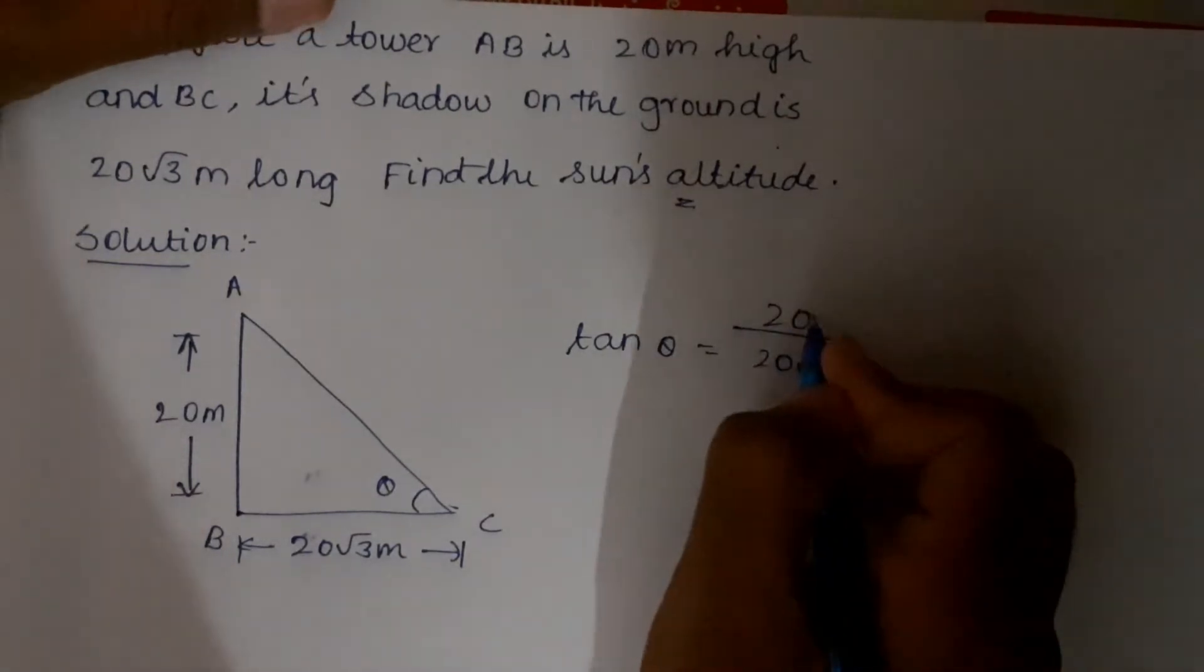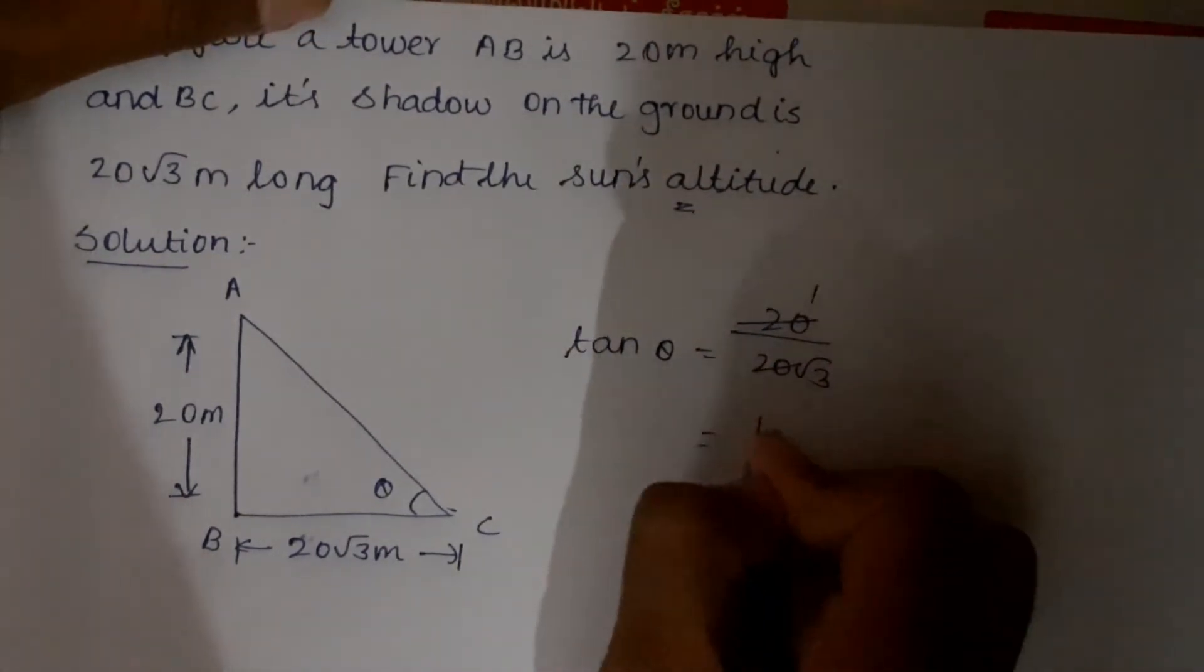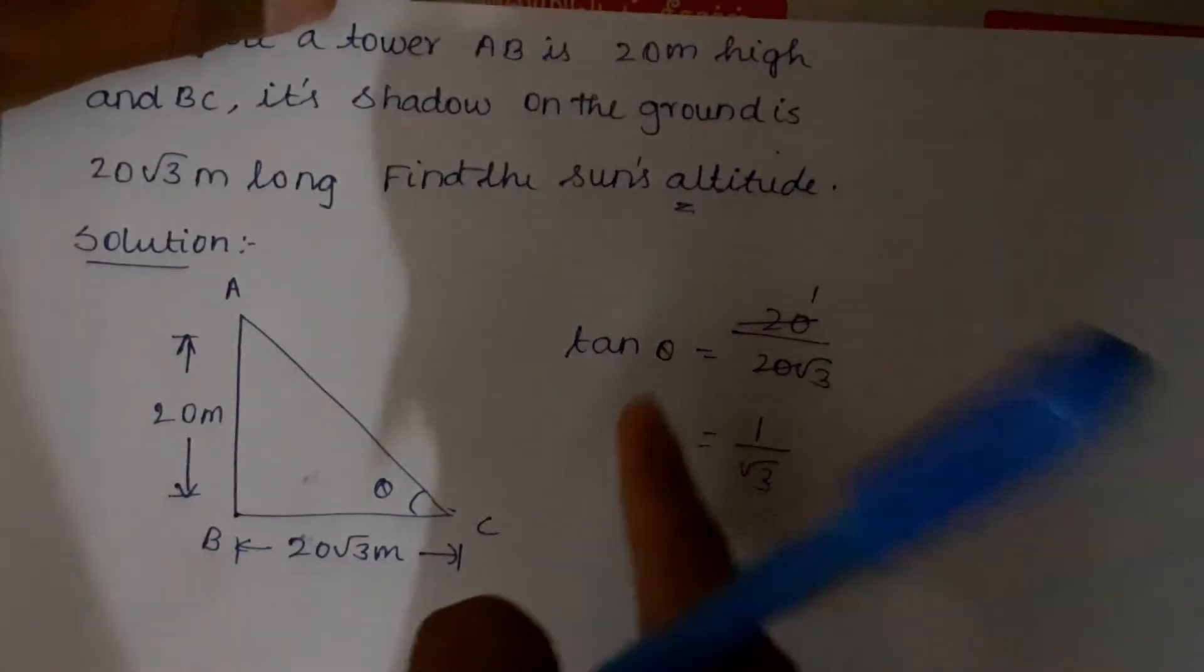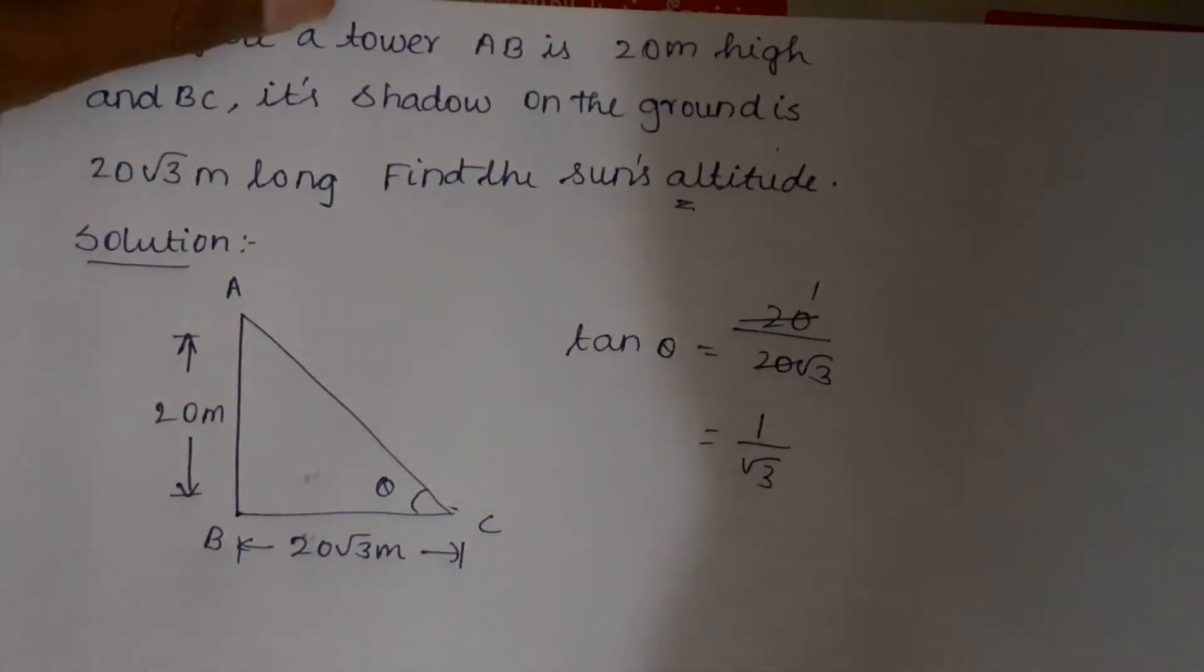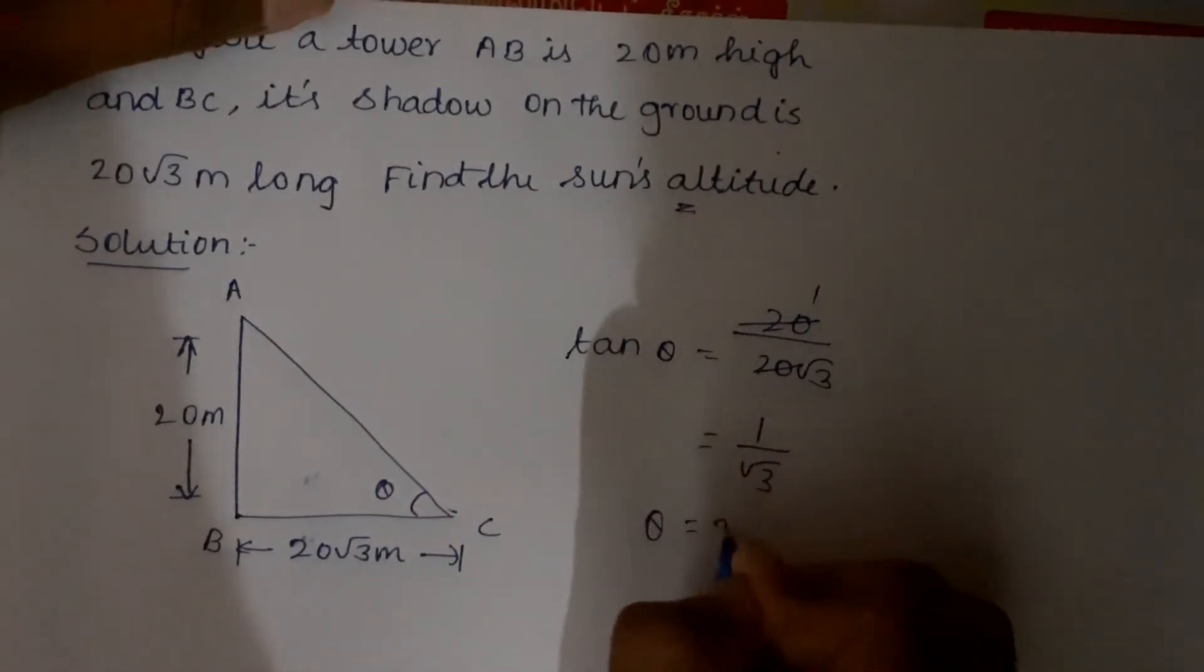For what value of theta do we get 1/√3? That's 30 degrees. So θ = 30°.